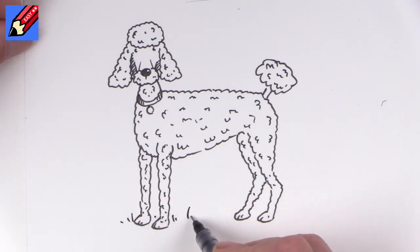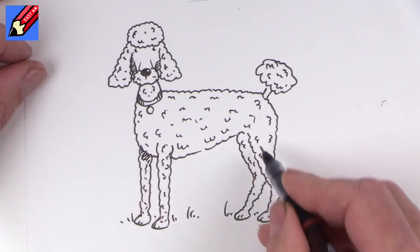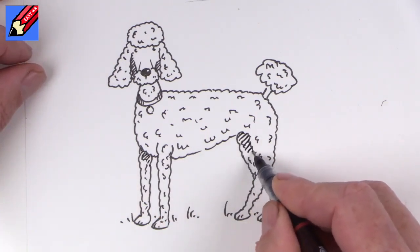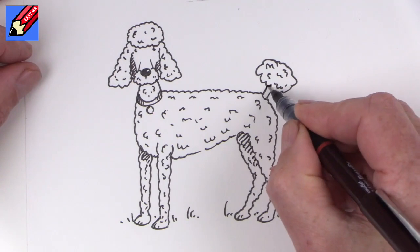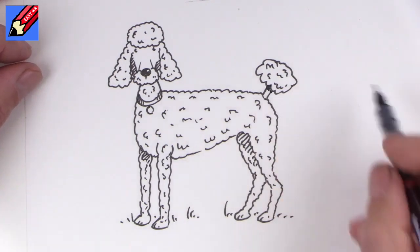We can have him standing on some grass like that. And you might want to put a bit of shading in there and a bit of shading in under there. Certainly a bit of shading under the pom-pom there.